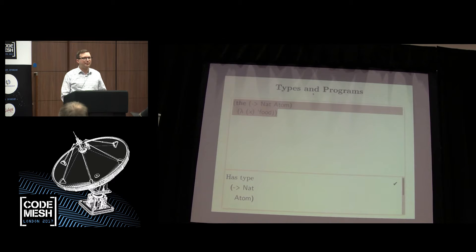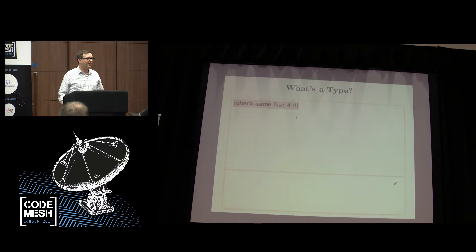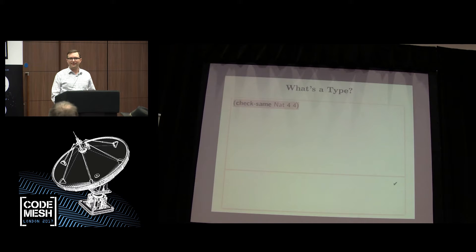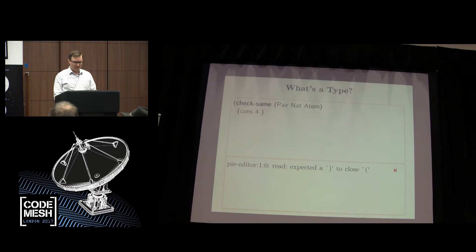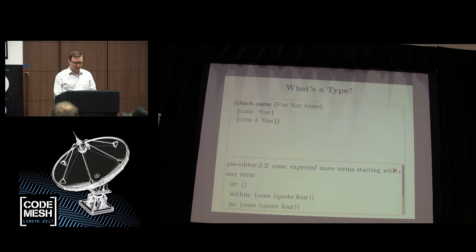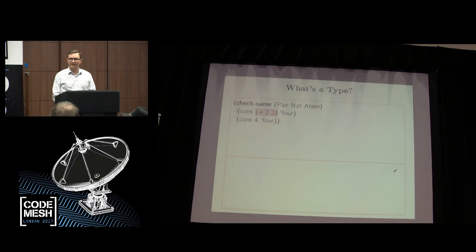But types are more than just things that collect programs into boxes. Types also tell us which of their programs are the same as the other programs in the box. So if I say 'check same', I'm asking Pi to tell me: are 4 and 4 the same with respect to nat's notion of sameness? And indeed they are. Whereas if I had said 4 and 5, then I would find out that 4 and 5 are not the same nat. And this isn't just the trivial thing it may look like, because I could also write 'plus 2 2' here and it still works. Running programs is part of what it means for them to be the same.